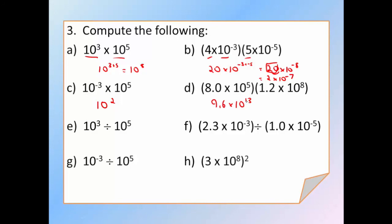What about division? Instead of add, you subtract. You have 10 to the 3 divided by 10 to the 5. It's going to be 10 to the 3 minus 5, which is equal to 10 to the minus 2. Looking at f, same idea. You have to divide the numbers in front first, then you divide the exponents next. 2.3 divided by 1 is just 2.3 times 10 to the 8. Well, you have minus 3. Subtract minus 5, which is going to be actually a positive 2. Looking at g, we have 10 to the minus 3 divided by 10 to the 5. We have minus 3. Subtract minus 5. You're going to end up with 10 to the minus 8.